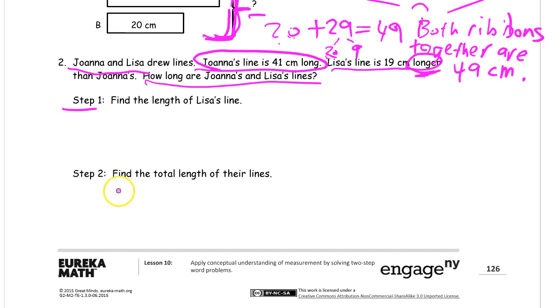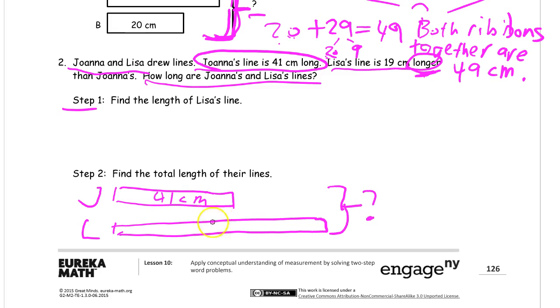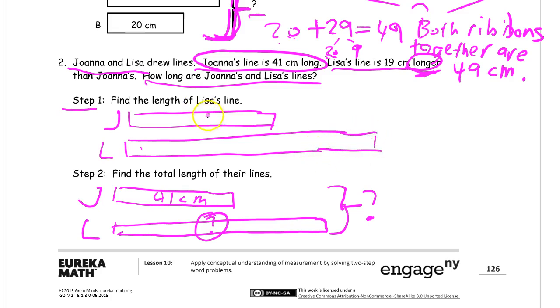The first step is find the length of Lisa's line. We just draw it like the one that was above, right? We know Joanna's line is 41, that's Joanna's line. We'll write it right in the middle here: 41 centimeters. And we know that Lisa's line is longer than that. We want to find the two of them together. We don't know how long Lisa's line is, so that's what we have to find out first.